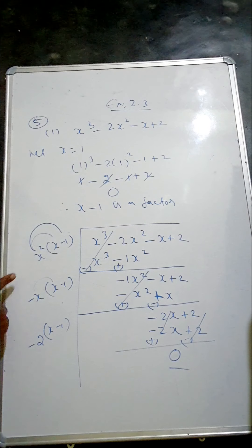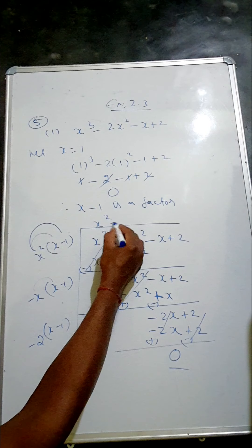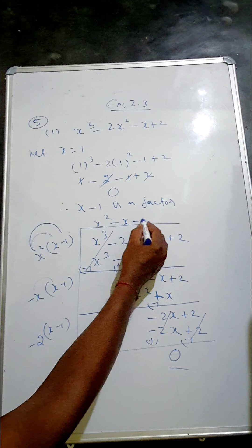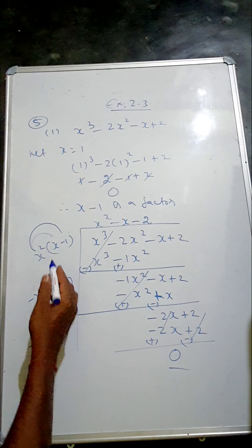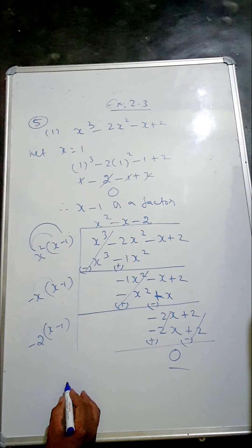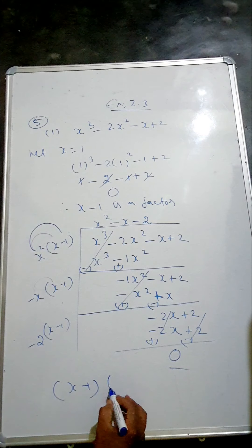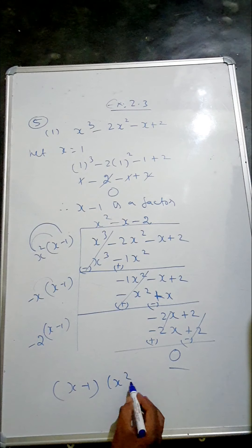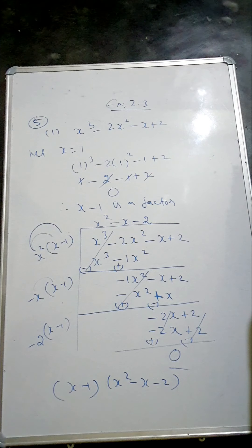The remainder is 0. The quotient we obtained is x squared minus x minus 2. So the factors so far are x minus 1 multiplied by x squared minus x minus 2. Now we need to factorize x squared minus x minus 2 by using the splitting-the-middle-term method.